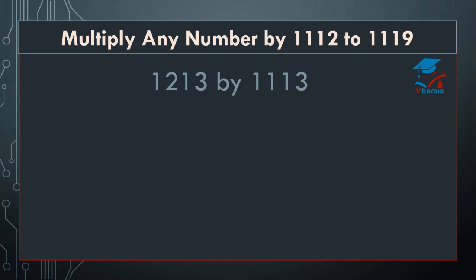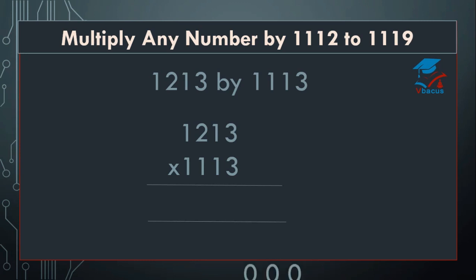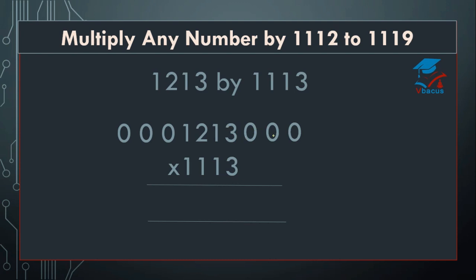Now let us try: multiply any number by 1112 to 1119. Here you have to insert 3 zeros on the left hand side, multiply by 3, and keep on adding 4 digits at a time. So, 3 threes are 9 plus 0 plus 0 plus 0 equals 9. Write 9. Cut the 0. 3 ones are 3 plus 3 equals 6, plus 0 equals 6, plus 0 equals 6. Cut the 0. Now, 3 twos are 6 plus 1 equals 7, plus 3 equals 10. Write 0, 1 will be carried over.